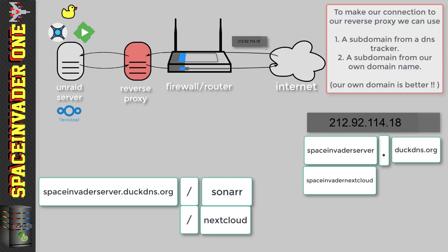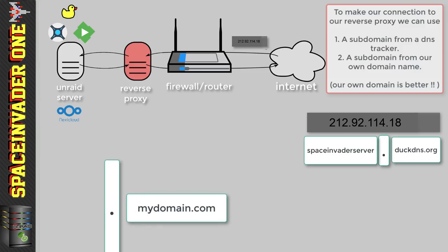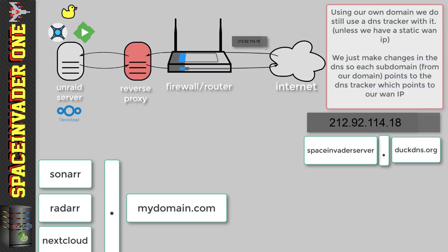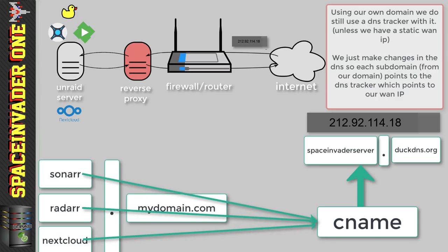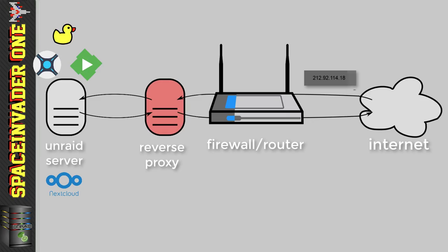Using a lot of subdomains with DuckDNS, while possible, is inconvenient because each subdomain has to be updated with your WAN IP. So the best thing to do is to use your own domain name. Domains are really cheap nowadays — around six pounds or about ten dollars — so it's well worth spending that money. With your own domain you can create multiple subdomains like sonar.mydomain, radarr.mydomain, nextcloud.mydomain, and so on. You'd create CNAME records pointing to the dynamic IP tracker. Knowing these basics really helps when setting things up.